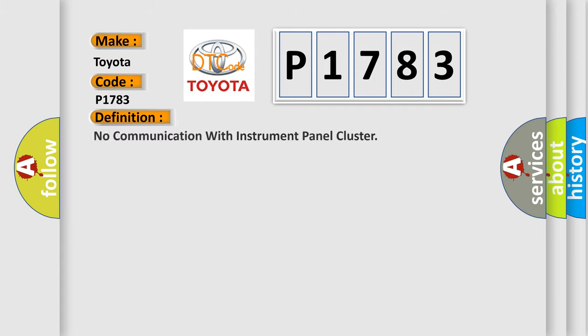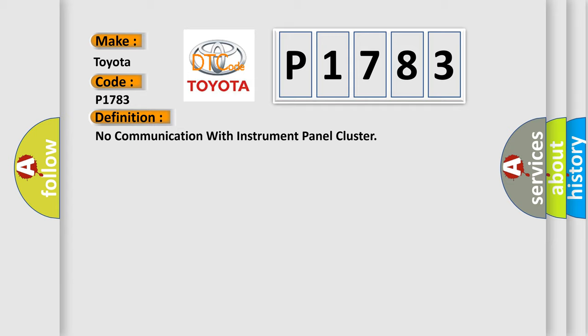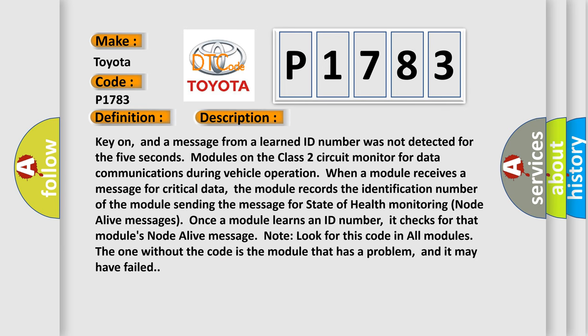The basic definition is: No communication with instrument panel cluster. Key on, and a message from a learned ID number was not detected for five seconds on the Class 2 circuit, which monitors data communications during vehicle operation. When a module receives a message for critical data, it records the identification number of the sending module for state-of-health monitoring. Once a module learns an ID number, it checks for that module's node alive message.